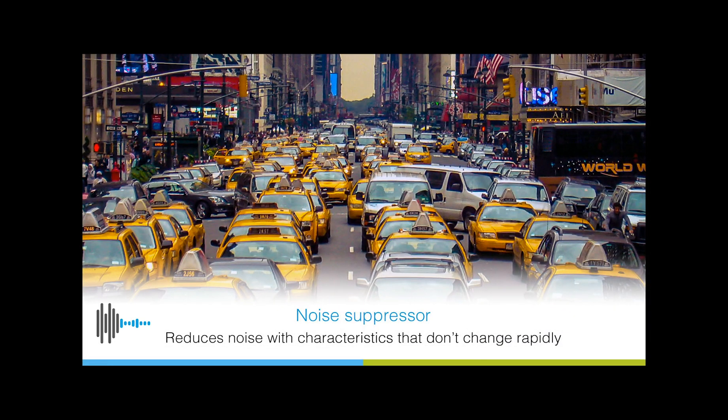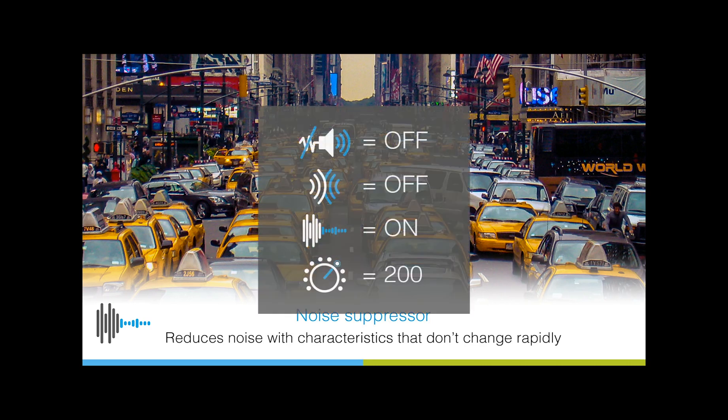Noise suppression reduces other noise sources with frequency characteristics that don't change rapidly over time, or diffuse noise as it's known technically. For example, the hum from an air conditioning unit, general kitchen noise, or traffic. The following clip shows the effect of the noise suppressor on some background traffic noise. The AEC and interference canceller blocks have been turned off and gain set to a default value.